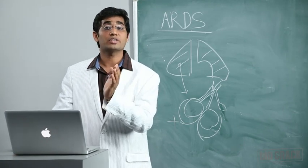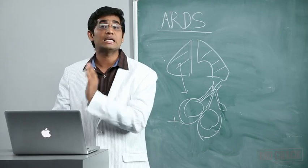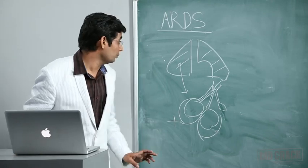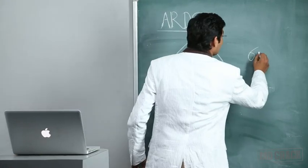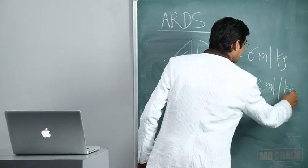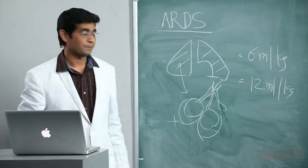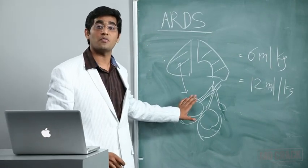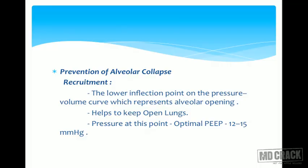What should be our tidal volume? It should not be more than 6 ml per kg body weight, compared to conventional 10-12 ml per kg. This prevents over-distention of normal alveoli.